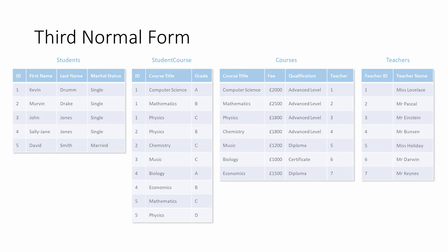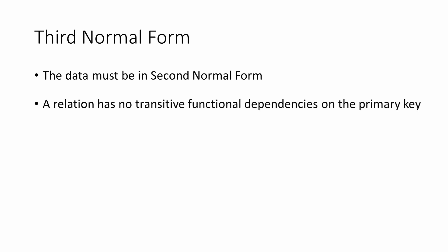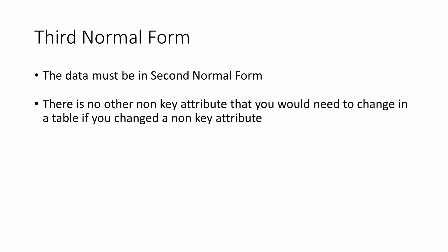In summary, to be in third normal form, the data must already be in second normal form, and a relation has no transitive functional dependencies on the primary key. Or, put more simply, the data must already be in second normal form, and there is no other non-key attribute that you would need to change in the table if you changed a non-key attribute.